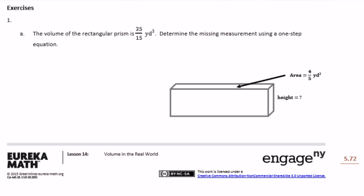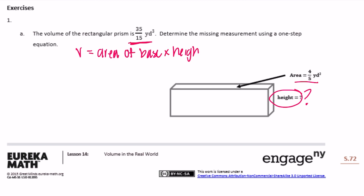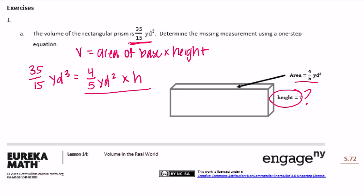Exercises, number 1: the volume of the rectangular prism is 35/15 yards cubed. Determine the missing measurement using a one-step equation. A one-step equation means it only takes one step to solve. We know the volume and the area of the base; we need the height. Volume equals area of the base times height: 35/15 yards cubed equals 4/5 yards squared times the height.